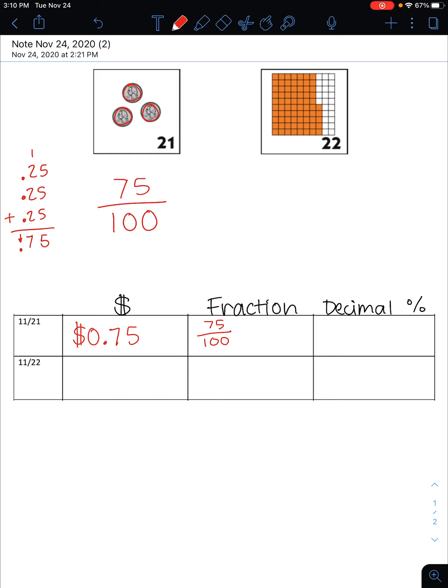I can write the fraction 75 hundredths as a decimal by putting the 75 in the hundredths place. And if I want to convert this decimal to a percentage, I need to move my decimal point two spots to the right.